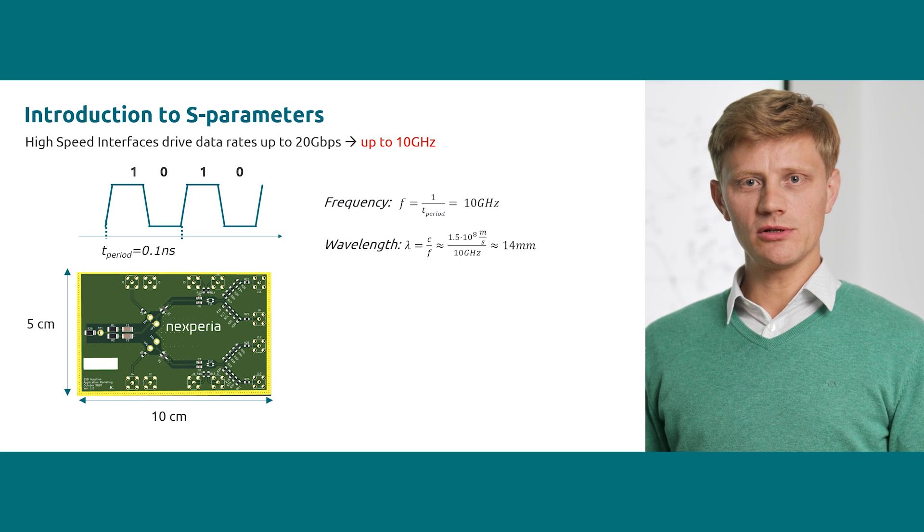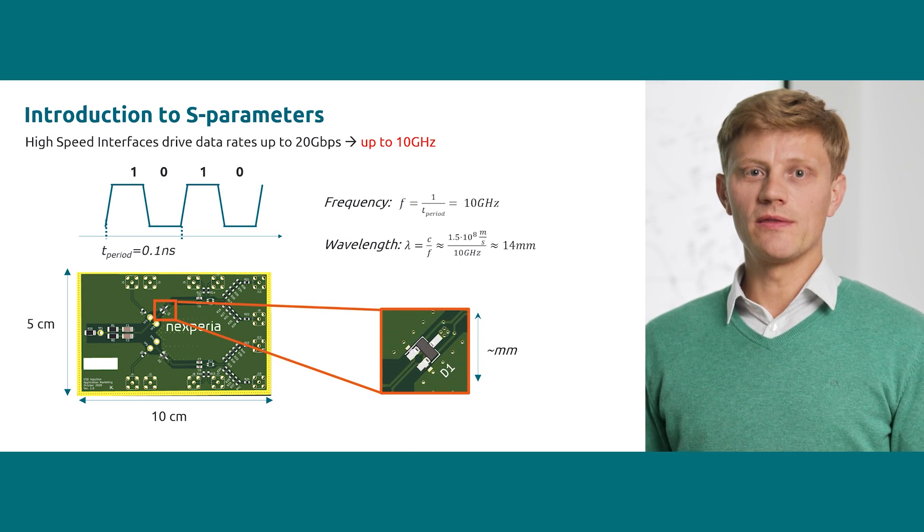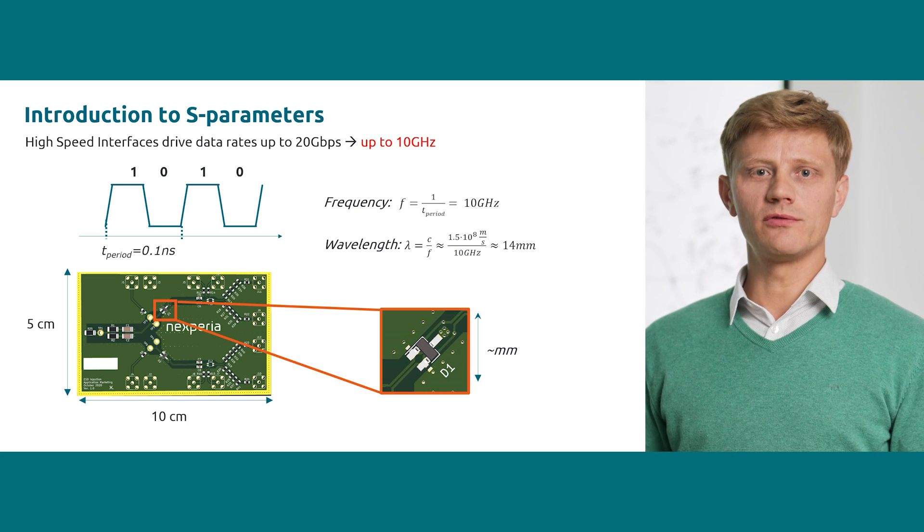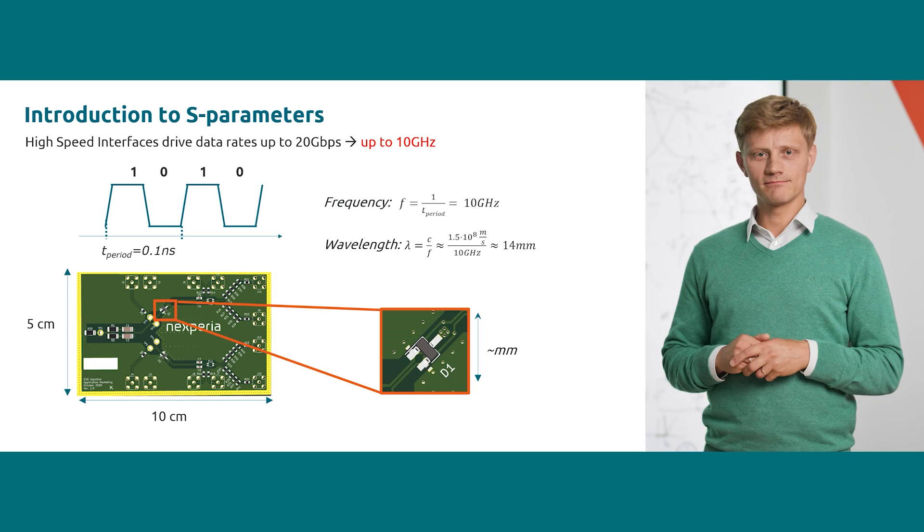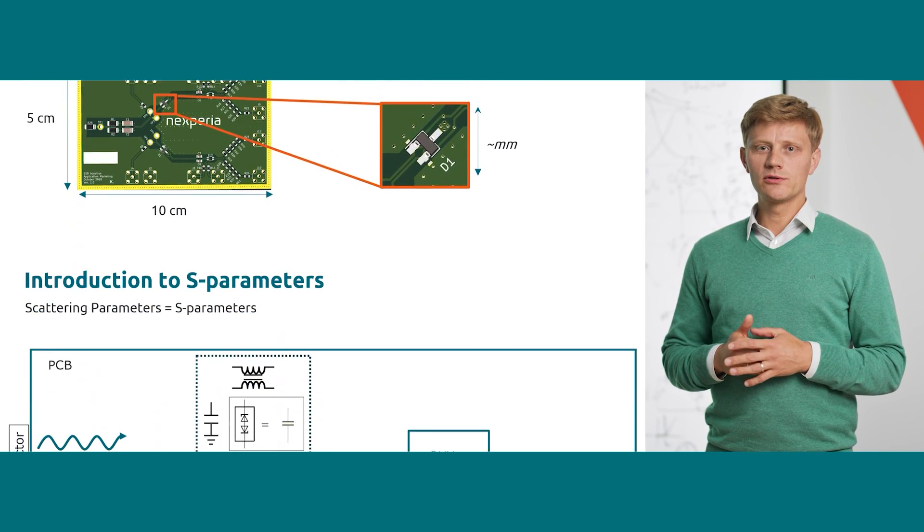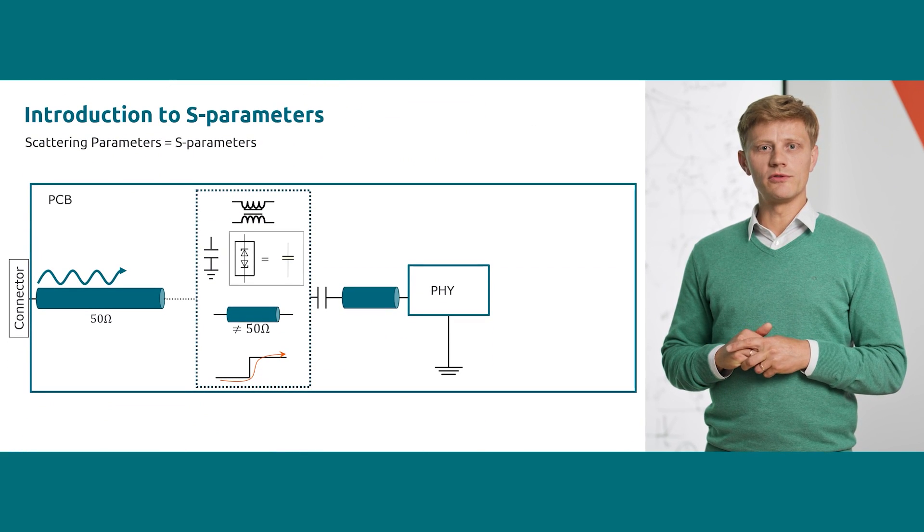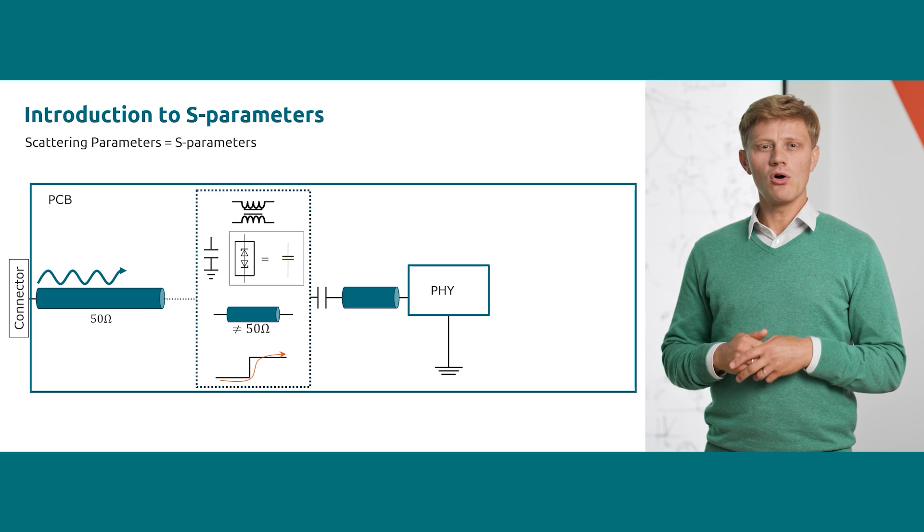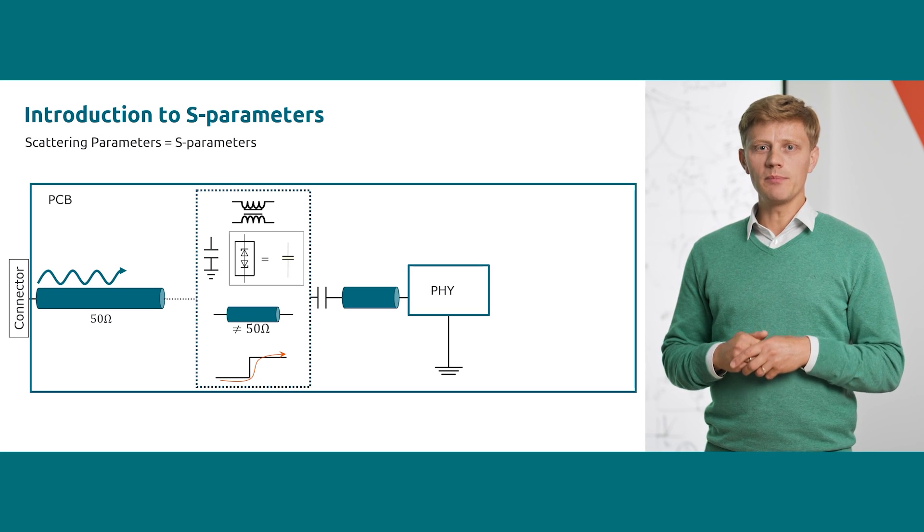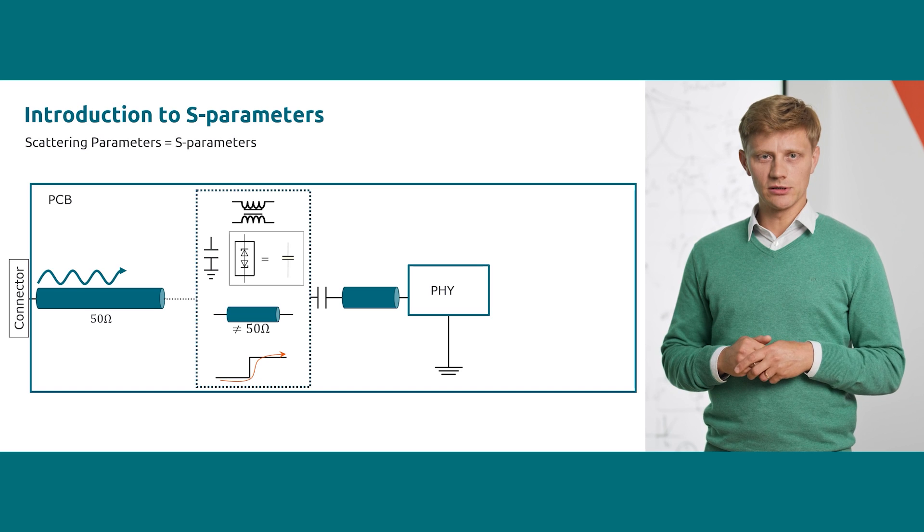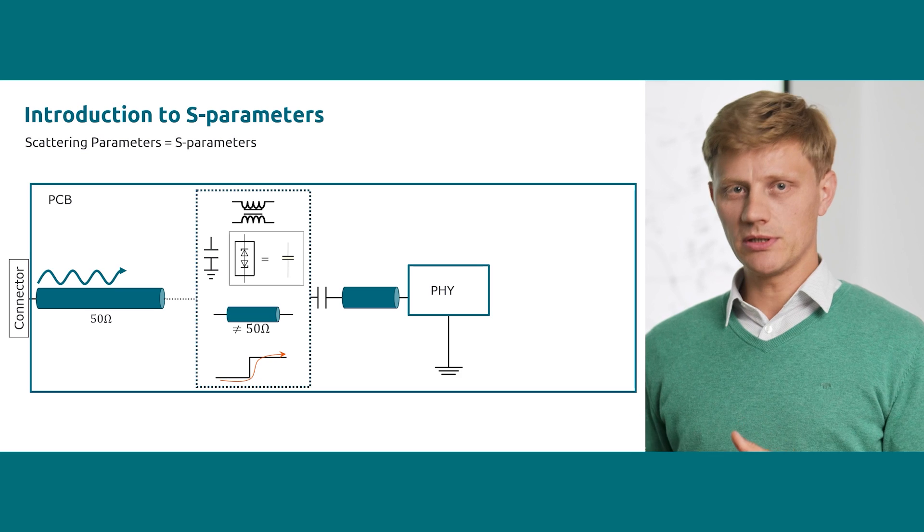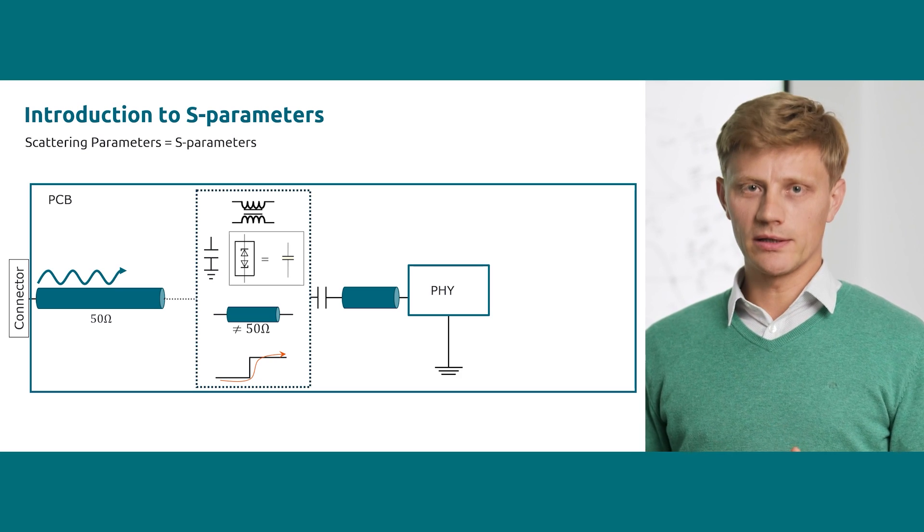The comparison to dimensions of typical PCB shows that this wavelength is already in the range of typical dimensions of electronic components. Now, any discontinuity in the transmission path of the signal which can be an electronic component, impedance change, or even a bend of the trace can be a handicap for the traveling signal. This has consequences since one portion of the signal will be transmitted and the other will be reflected.